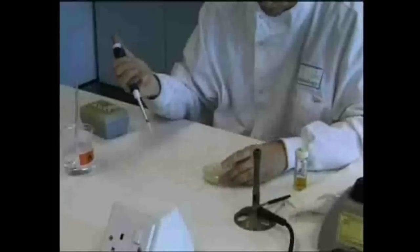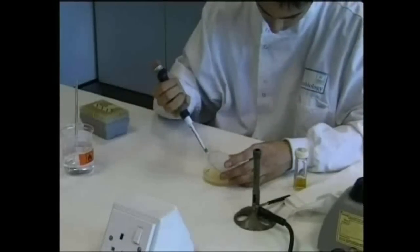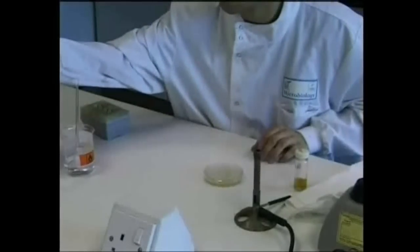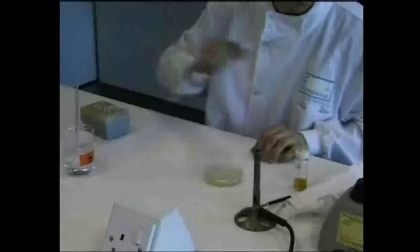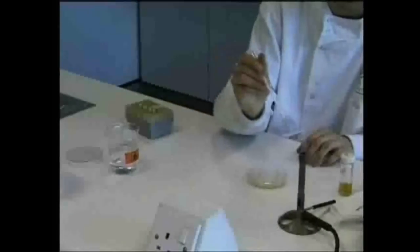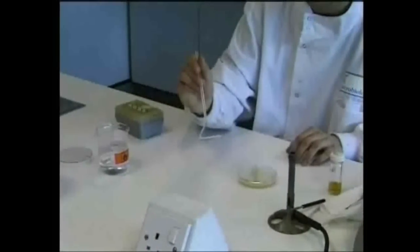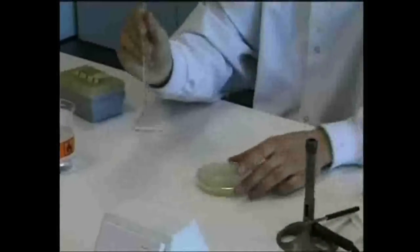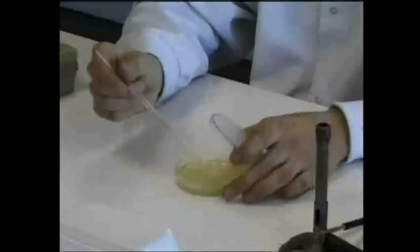The neck of the culture bottle is then reflamed and the lid is replaced. With the lid of the Petri dish raised slightly, the culture is pipetted into the centre of the plate and the pipette is then discarded. The glass spreader is then dipped in the alcohol and flamed to sterilize it. To avoid the risk of fire, the beaker containing the alcohol should not be too near the Bunsen flame.